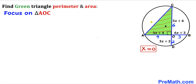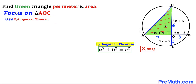Let's focus on this green right triangle AOC whose known side lengths are 4 and 6. We need to calculate side length AC, so we apply the Pythagorean theorem: a² + b² = c². Calling AC the hypotenuse (side c), and the legs lowercase a = 4 and lowercase b = 6, we fill in: 4² + 6² = c².